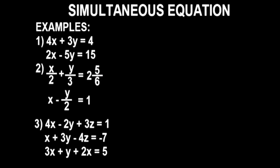Hello guys, welcome back to my channel. In this video we are going to learn how to solve problems involving simultaneous equations using the Casio fx-991ES Plus second edition scientific calculator — 20 seconds fast and easily — a multiple choice question. So ensure you stay with me till the very end of this video. As usual, you guys are going to learn a lot.